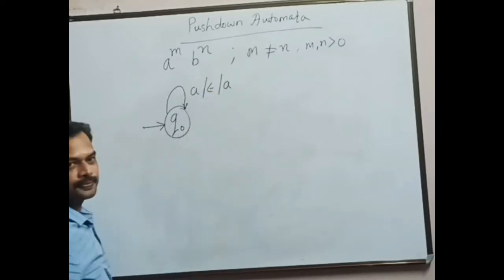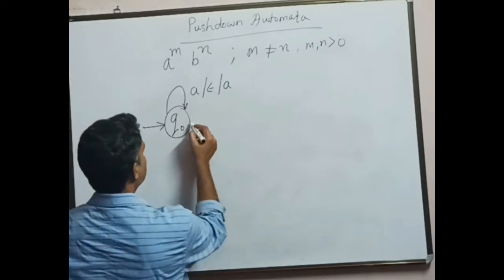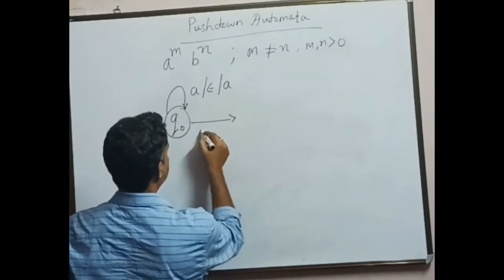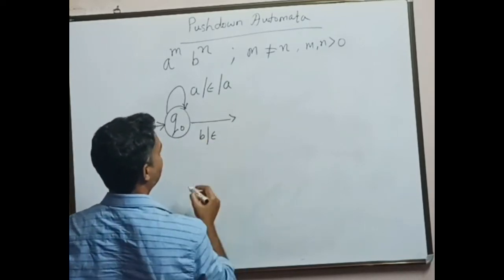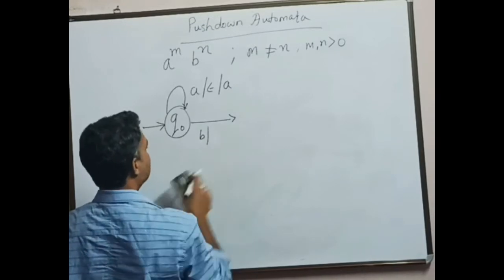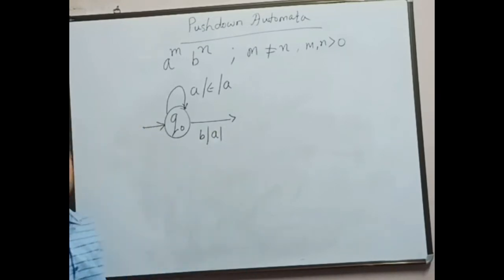Suppose if it comes across b, then let it pop the a that is present on the top of the stack, with no push operations.